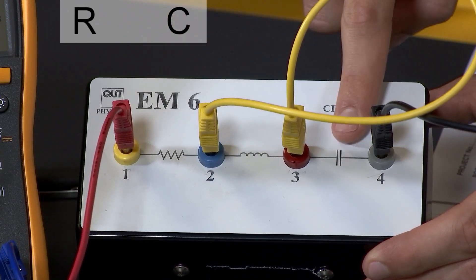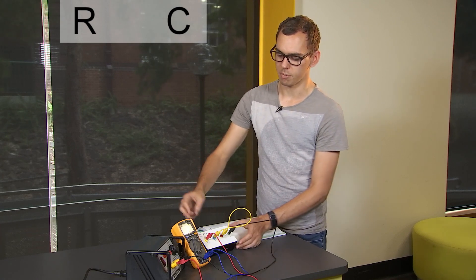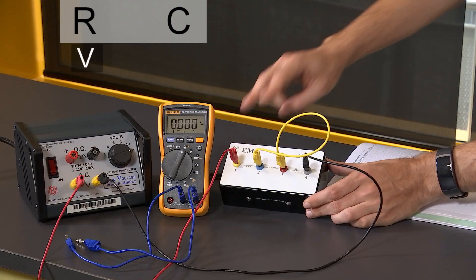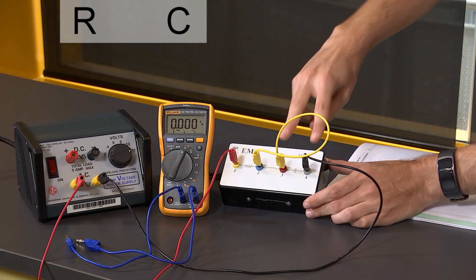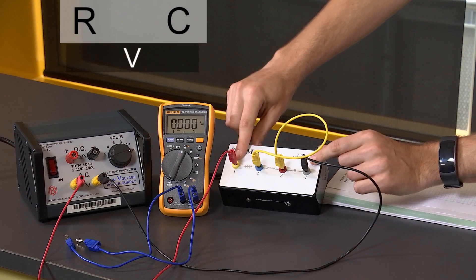So now we have our RC circuit and once again I'm going to connect the multimeter to measure the voltage drop across the resistor in one and two, the capacitor in three and four, and the combination in one and four.